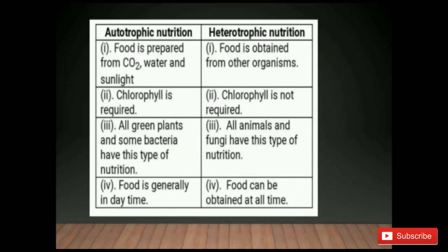The differences between autotrophic and heterotrophic nutrition: in autotrophic nutrition, food is prepared from carbon dioxide, water and sunlight; in heterotrophic nutrition, food is obtained from other organisms. Chlorophyll is required in autotrophic nutrition but not in heterotrophic nutrition. All green plants and some bacteria have autotrophic nutrition; all animals and fungi have heterotrophic nutrition. Food is generally made during daytime in autotrophic nutrition because sunlight is necessary, whereas food can be obtained at any time in heterotrophic nutrition.